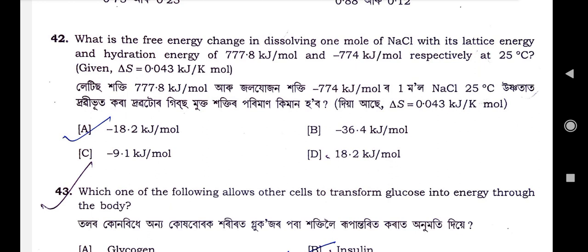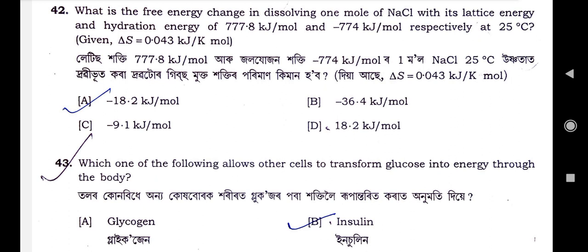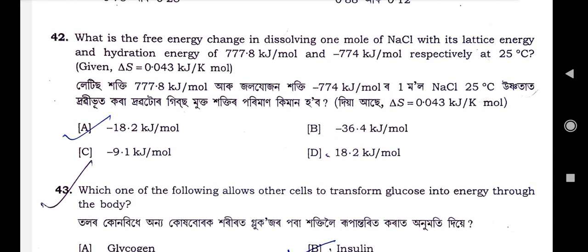Question number 42: What is the free energy change in dissolving one mole of sodium chloride, with lattice energy and hydration energy of 777.8 kJ/mol and –774 kJ/mol respectively at 25°C, given delta S = 0.043 kJ per K·mol? The correct answer is option A: –18.2 kJ/mol. Options B, C, D are wrong. You can find this by applying the formula.